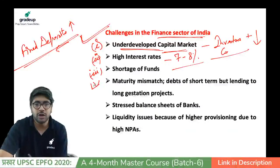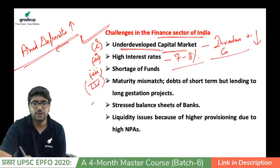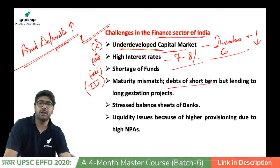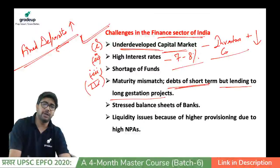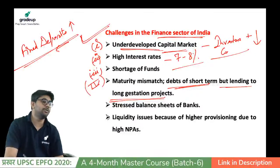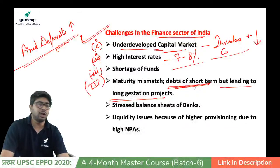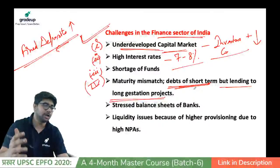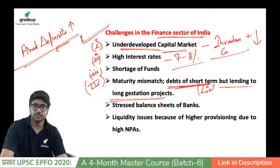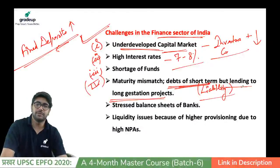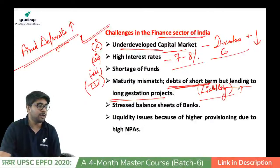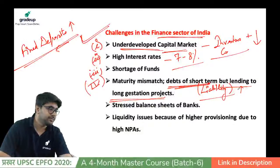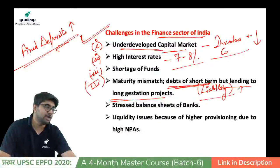Fourth is maturity mismatch — debts are short-term but lending goes to long gestation projects. In short-term funding, the liability of the company increases in the shorter run, yet the project is not finished, recovery has not started, and the company still has to pay. So maturity mismatches are seen in many projects.